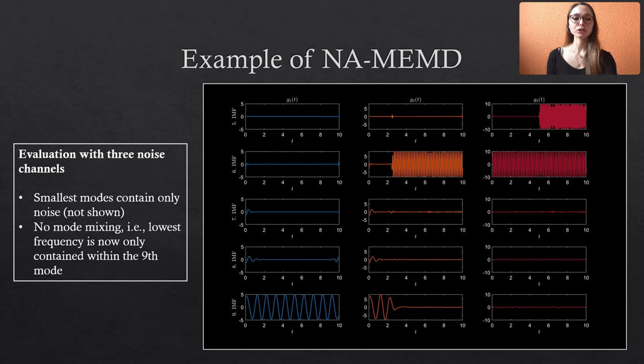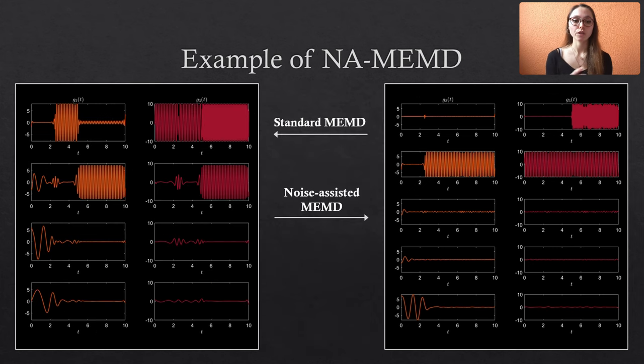Let me quickly show you the direct comparison between the MEMD results with and without noise assistance. On the left, you see the IMFs of two of the three variants when no noise is used during the decomposition. And on the right, you see the respective modes when we added three noise channels. Now, the great advantage of noise assistance is very obvious, I think.